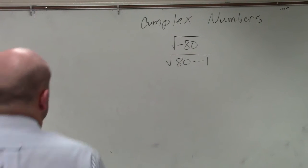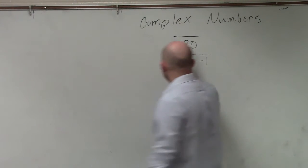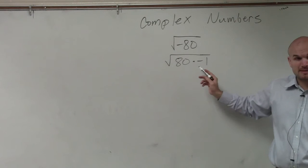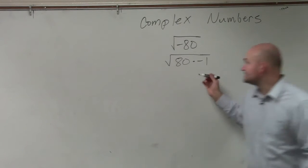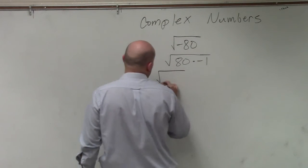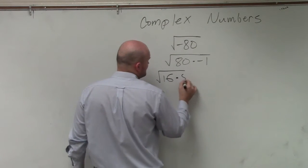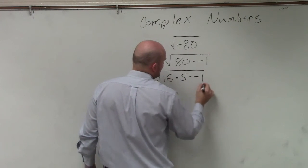So in this example, you have -80. It's negative, so you break it, you separate it. And then 80, I can separate into 16 times 5 times negative 1.